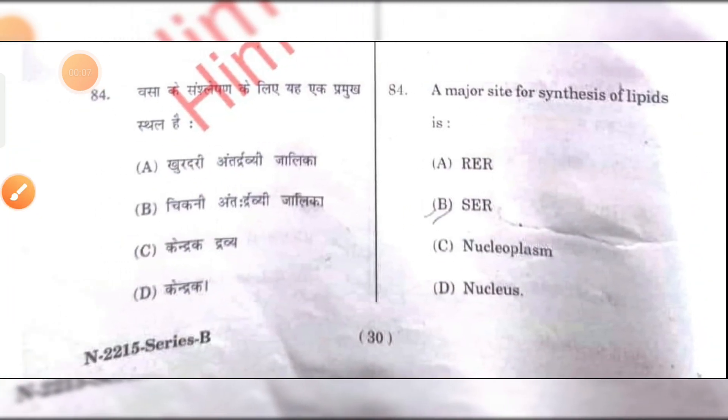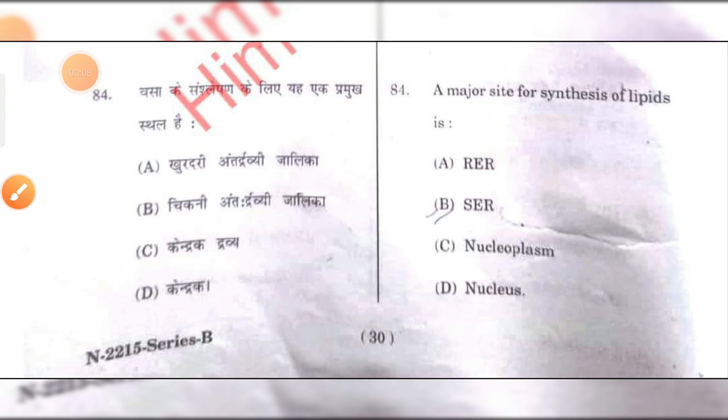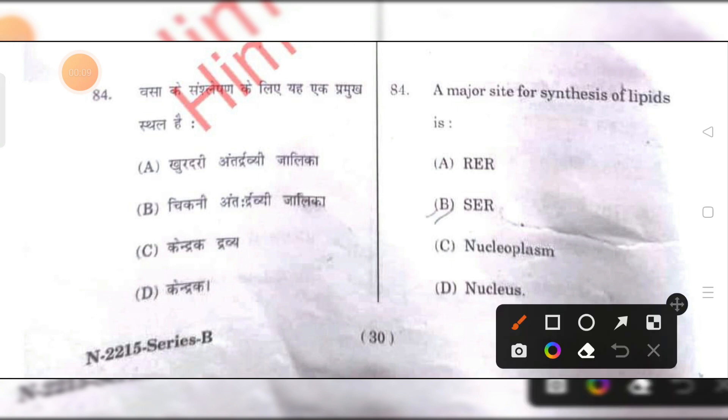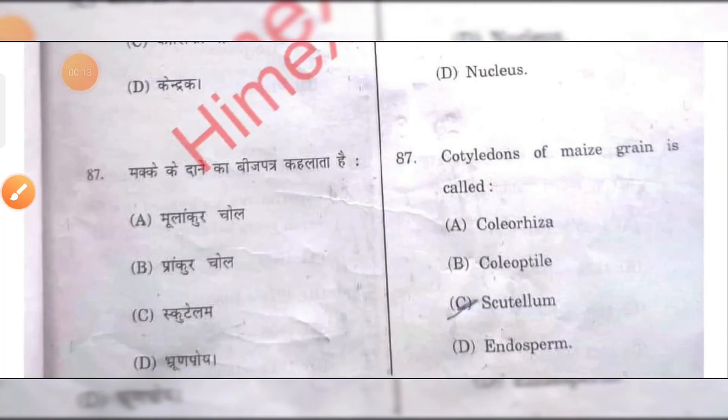A major site of synthesis of lipids is the smooth endoplasmic reticulum. B is the right answer.